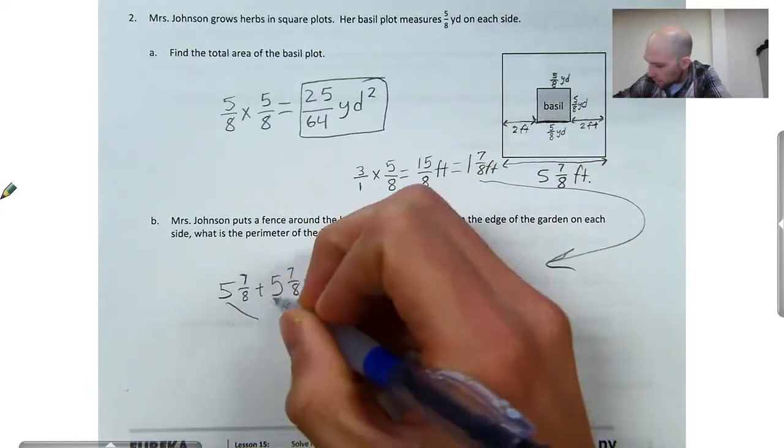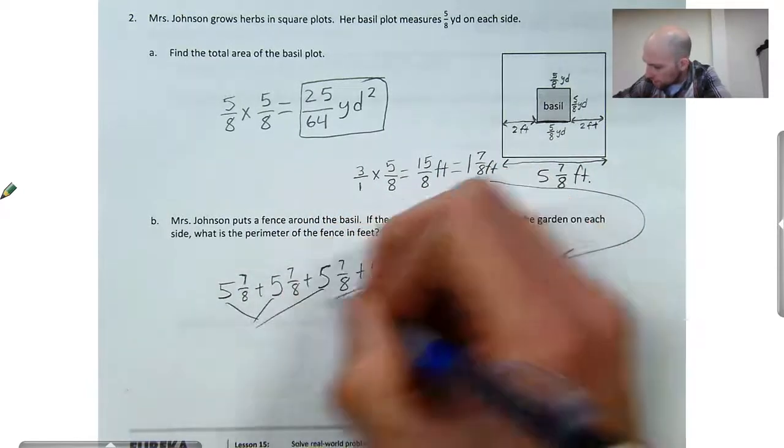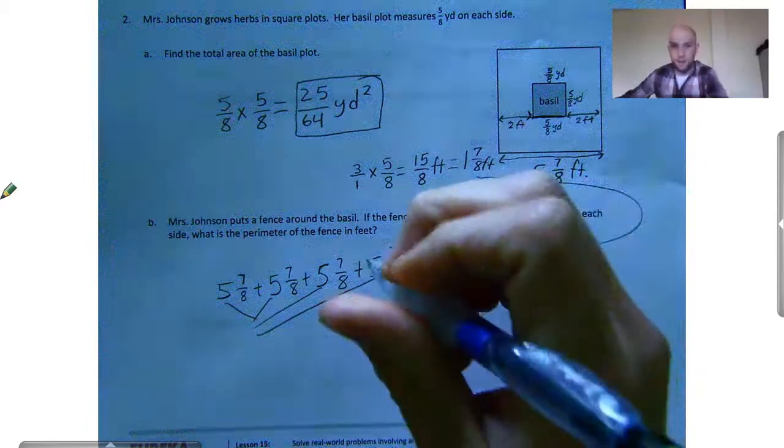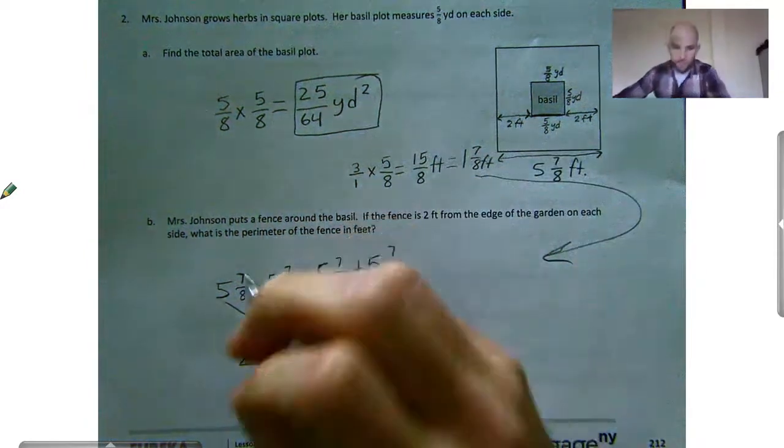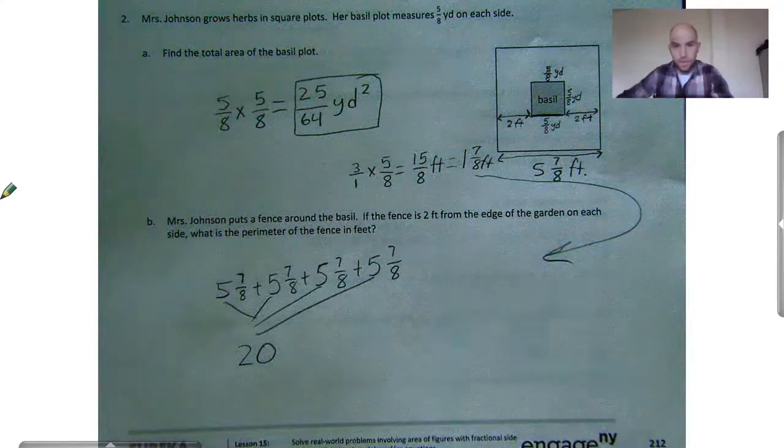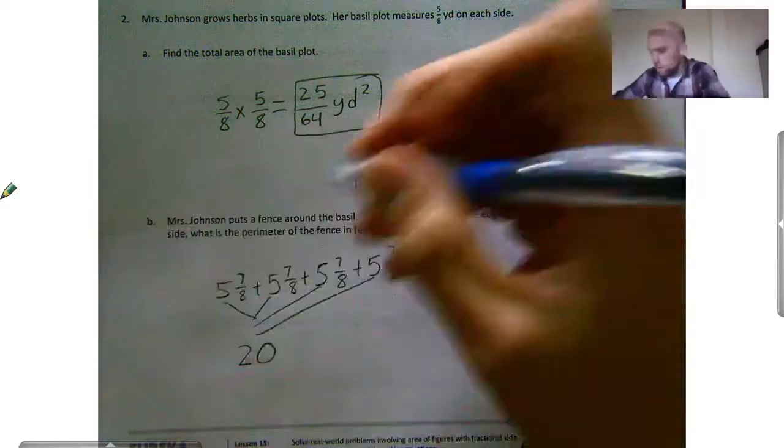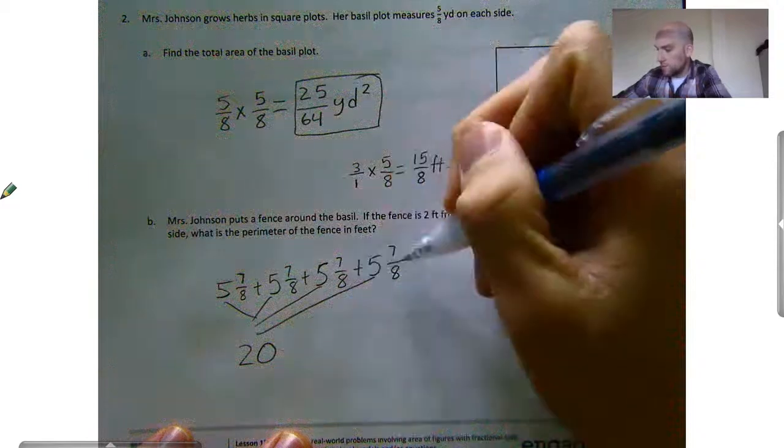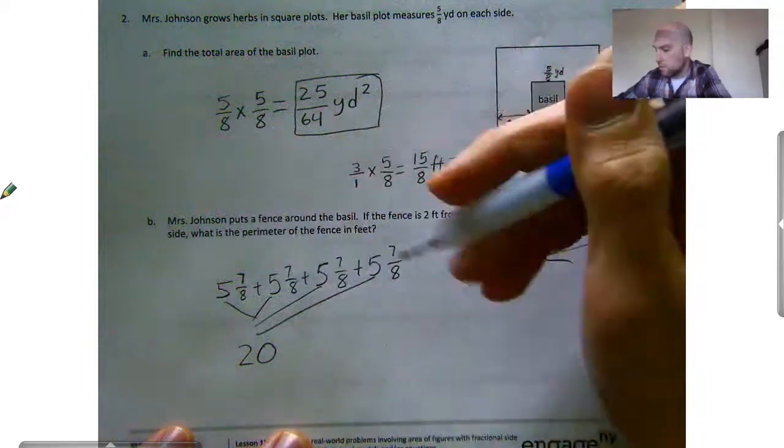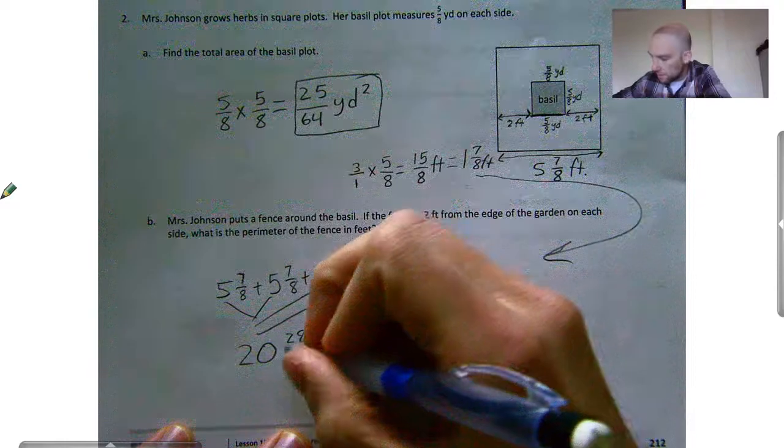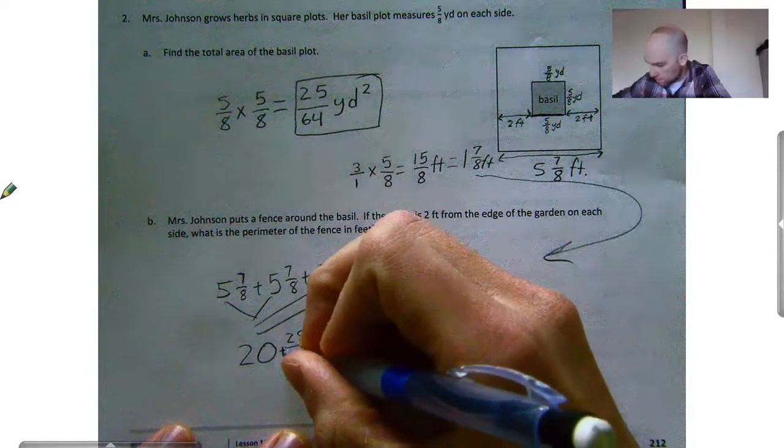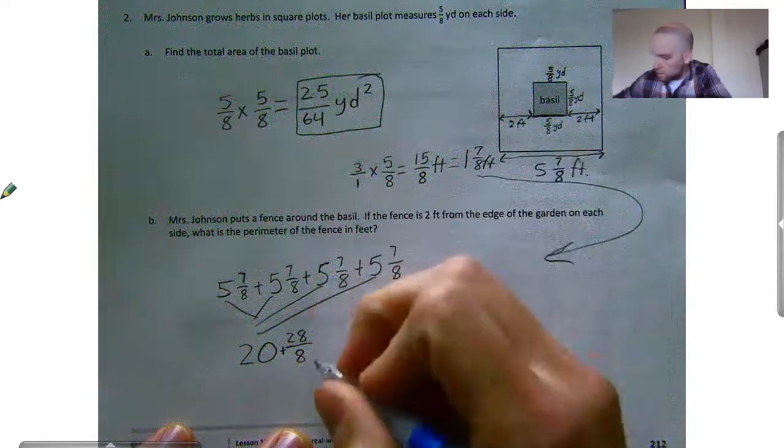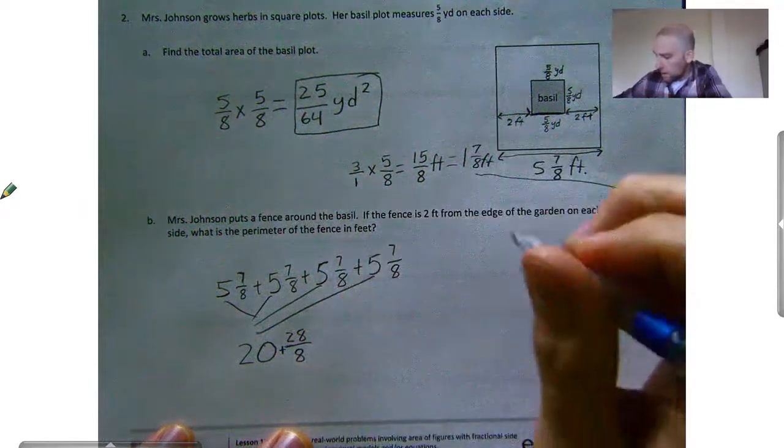I'm going to take my whole numbers first. I have four fives there, which is going to give me 20. And then I have seven-eighths, plus seven-eighths, plus seven-eighths, plus seven-eighths. Well, seven times four is 28. It's going to give me 28-eighths.